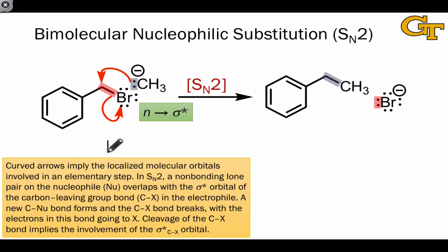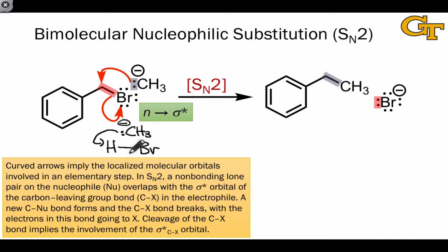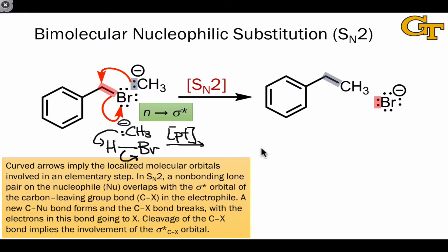This is analogous to the proton transfer elementary step. To show that, it's worth drawing this SN2 reaction but just replacing the large carbon fragment with a hydrogen. When we do that and draw the same curved arrows, we can see that the proton transfer step is highly analogous to the SN2 step. The curved arrows are identical, the orbital interaction is identical, and all that's changed is the replacement of the carbon group for hydrogen.